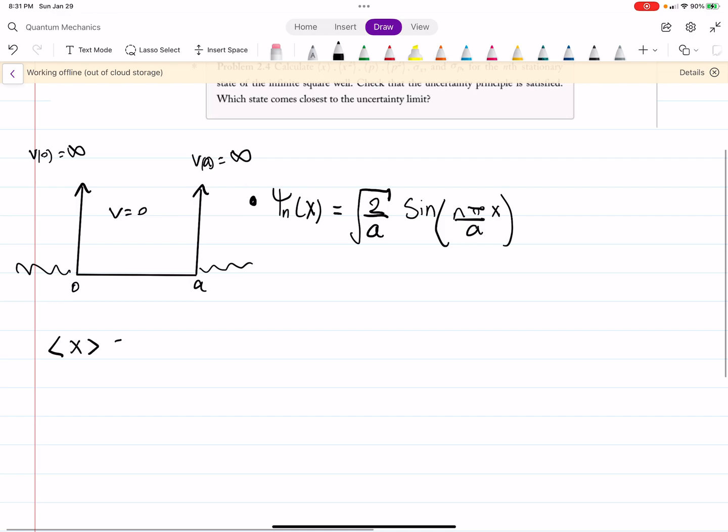So, we need to find the expectation value of x first. And to do that, that's just going to be x times psi squared dx. So, you'll have 2 over a out front integral x sine squared of n pi over a x dx. And we're going to integrate this from 0 to a, since those are our bounds.